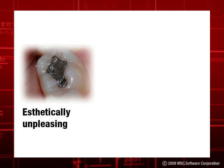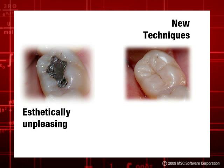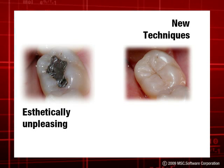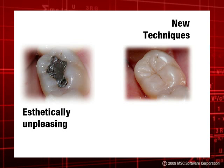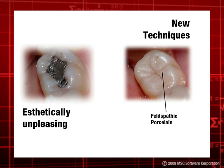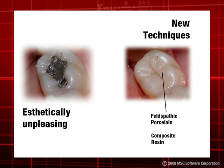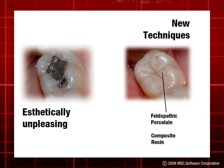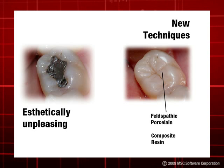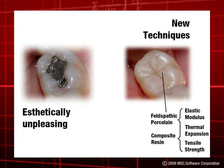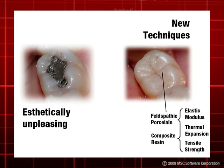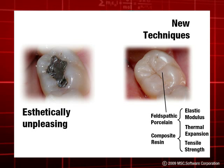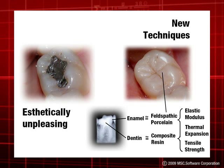Thanks to the research in this area, today new innovative techniques are being exercised in dental restorations. New materials like porcelain and composite resins are being used in fillings and restoration procedures. These materials have equivalent elastic modulus, thermal expansion, and tensile strength properties to enamel and dentin respectively.